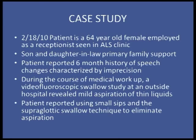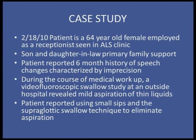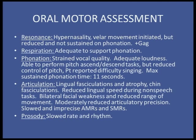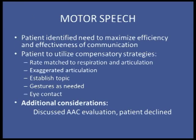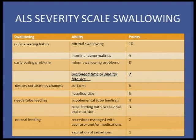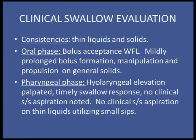Case study: a 64-year-old woman employed as a receptionist, with her son and daughter-in-law as primary support. She reported a six-month history of speech changes. A video swallow study showed mild aspiration of thin liquid, managed with small bites and sips. Her oral motor assessment showed hypernasality, strained strangled vocal quality, lingual fasciculations, facial weakness, and slowed speech — intelligible with repeating, around a score of six. She wanted to work on exaggerated articulation and matching respiration to speech rate. Her swallow was within functional limits with small bites and sips, scored at seven.